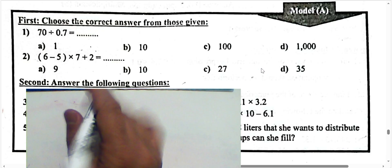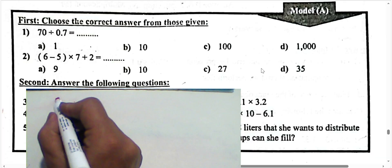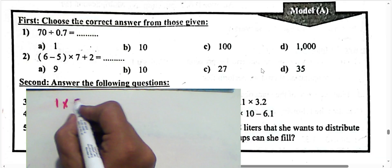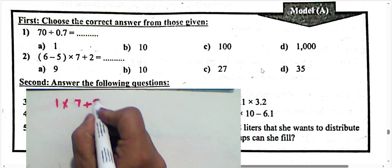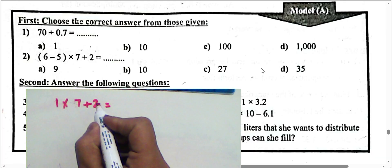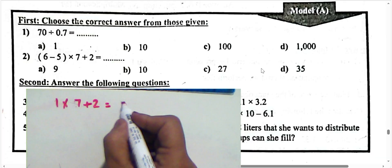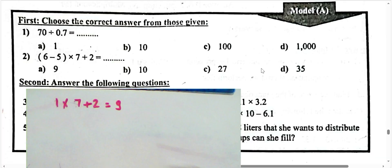Next, question number 2: 6 minus 5 equals 1. Then 1 times 7 plus 2 — 1 times 7 equals 7, and 7 plus 2 equals 9.